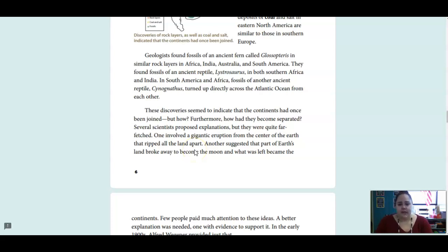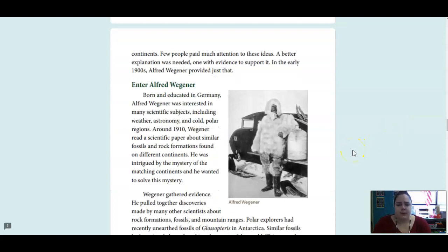Geologists found fossils of an ancient fern called Glossopteris in similar rock layers in Africa, India, Australia, and South America. They found fossils of an ancient reptile, Listosaurus, in both southern Africa and India. In South America and Africa, fossils of another ancient reptile, Kynognathus, turned up directly across the Atlantic Ocean from each other. These discoveries seemed to indicate that the continents had once been joined. But how? Furthermore, how had they become separated? Several scientists proposed explanations, but they were quite far-fetched. One involved a gigantic eruption from the center of the earth that ripped all the land apart. Another suggested that part of earth's land broke away to become the moon, and what was left became the continents. Few people paid much attention to these ideas. A better explanation was needed, one with evidence to support it.